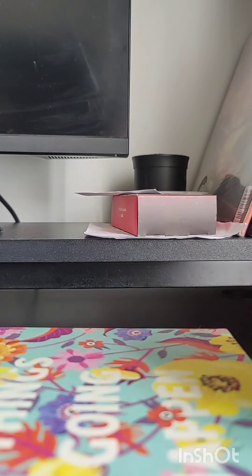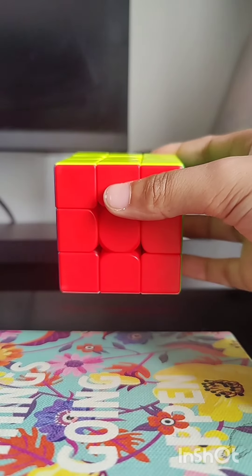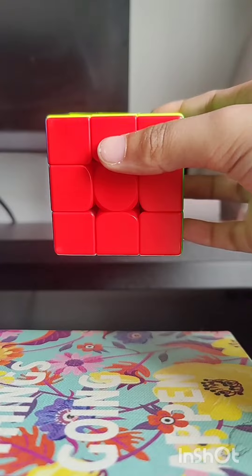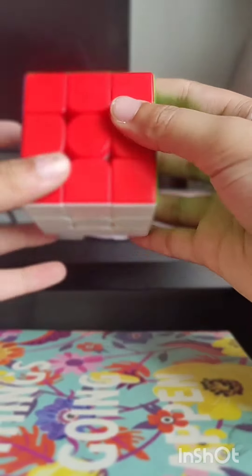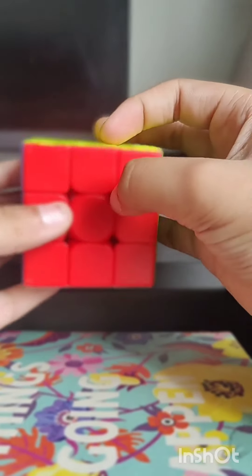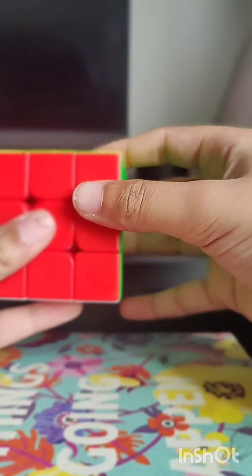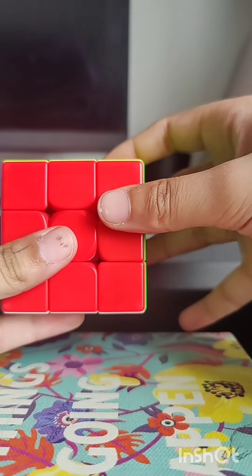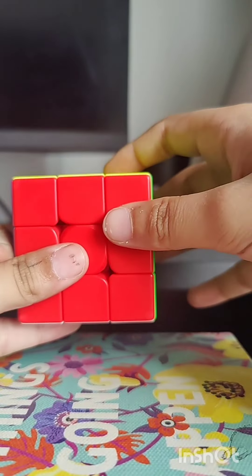What is up fellas, and today I'm going to be showing you how to solve the 21 PLLs. This time I'm going to show you the NB perm, the NA perm, the RA perm, and the RB perm, so let's get on with it.